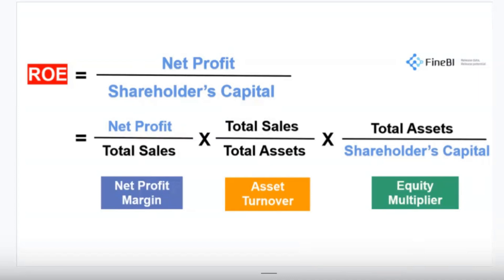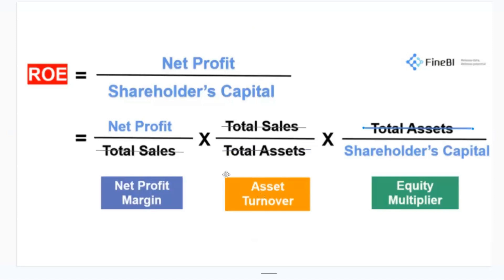If you look at the DuPont analysis specifically, what's highlighted is our net profit and our shareholders' equity — because the ROE formula is net profit divided by shareholders' equity. What's happening is if we cancel out total sales between the first and second equations, and then cancel out total assets between the asset turnover and the equity multiplier, we are left with the same exact formula for return on equity: net profit divided by shareholders' capital.